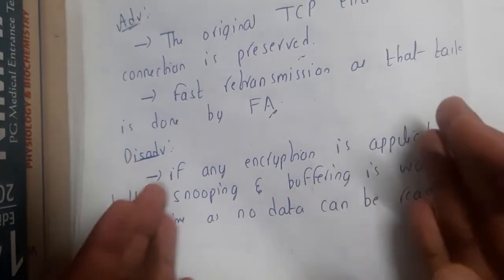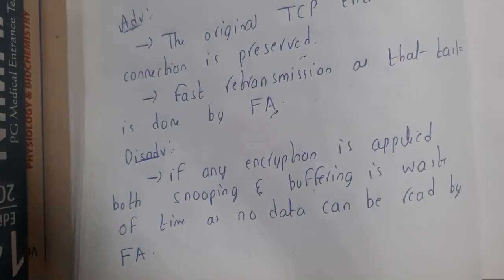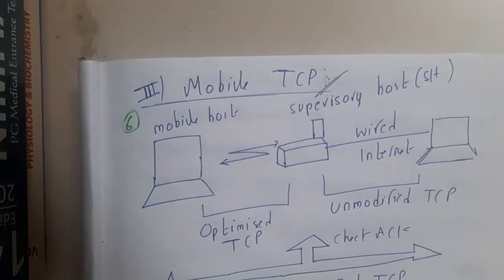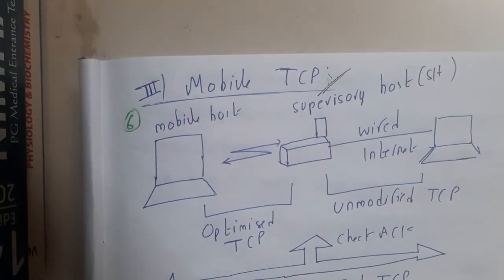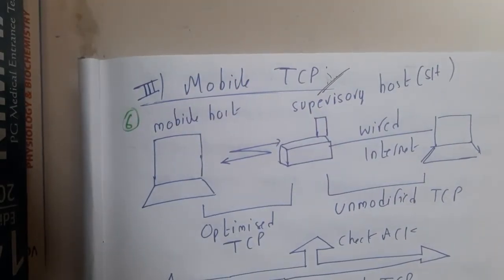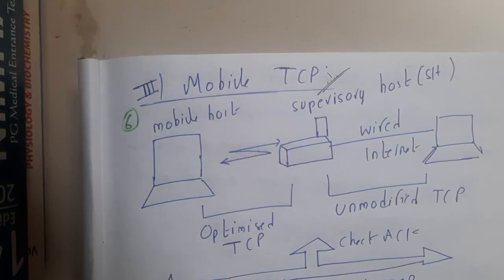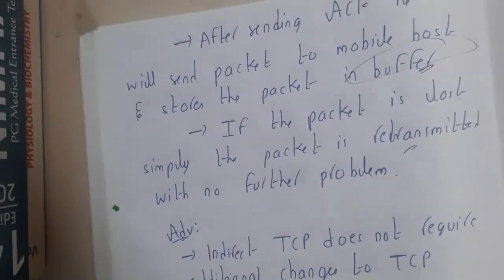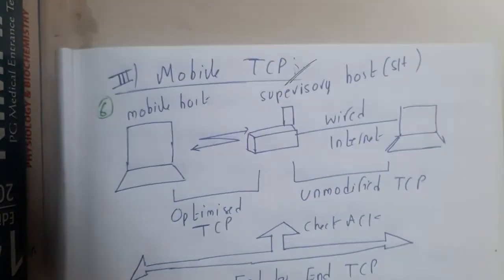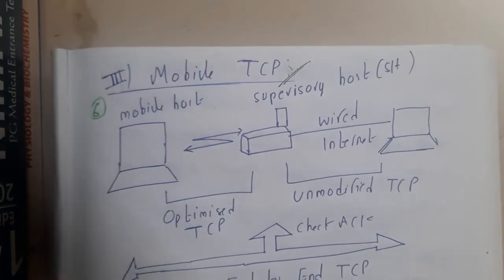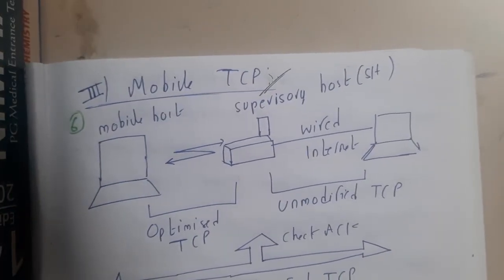If you want to encapsulate encryption, this method will not work — that is why Snooping TCP is also not used in practice. This introduces Mobile TCP, or MTCP. We will discuss Mobile TCP in detail in our next lecture. To summarize: we covered the disadvantages of previous TCP, the improvements made with Snooping TCP, and its own disadvantages, which lead us to Mobile TCP.